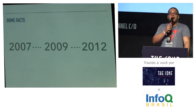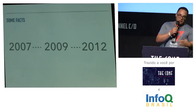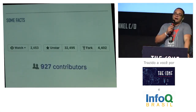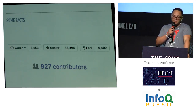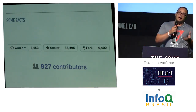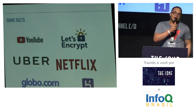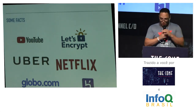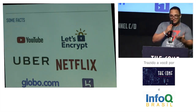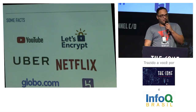Go development started in 2007. In 2009, it was open-sourced, and then in 2012 it was formally released to the public. On GitHub, Go has more than 32,000 stars and almost 1,000 contributors. It's been under heavy development since 2007. Go has also been largely adopted by big players like YouTube, Globe.com, Netflix, and Let's Encrypt — all leveraging what the language brings to the table.